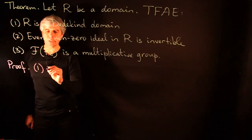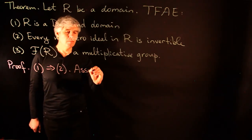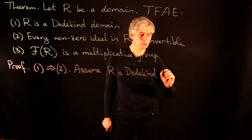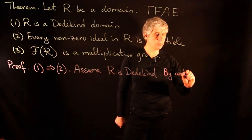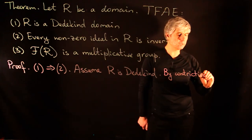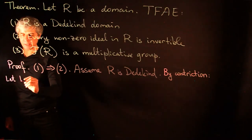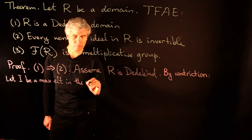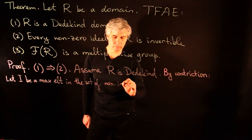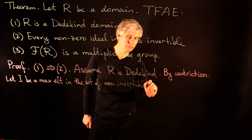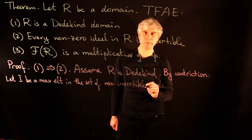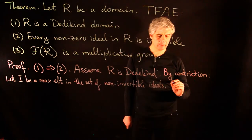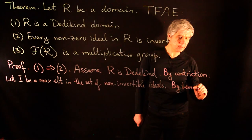Proof that one implies two: assume R is Dedekind. We reason by contradiction, assuming there exist nonzero non-invertible ideals. Let I be a maximal element in the set of non-invertible nonzero ideals — such a maximal element exists because R is Noetherian and every increasing chain of ideals terminates. By our lemma, I is not prime, because we proved all prime ideals are invertible.